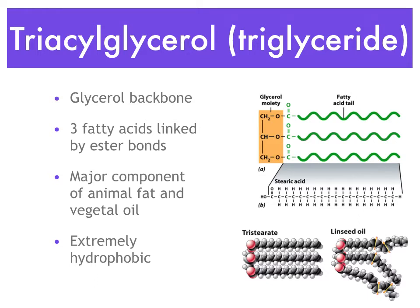The fatty acids represented here in green can be saturated or partially saturated. For example, tristearate is a triglyceride with three fully saturated fatty acids, so it is completely straight. Another example is linseed oil, which contains three fatty acids that are not fully saturated — they contain unsaturations and have kinks, so they are a bit larger and occupy more volume than fully saturated triglycerides.